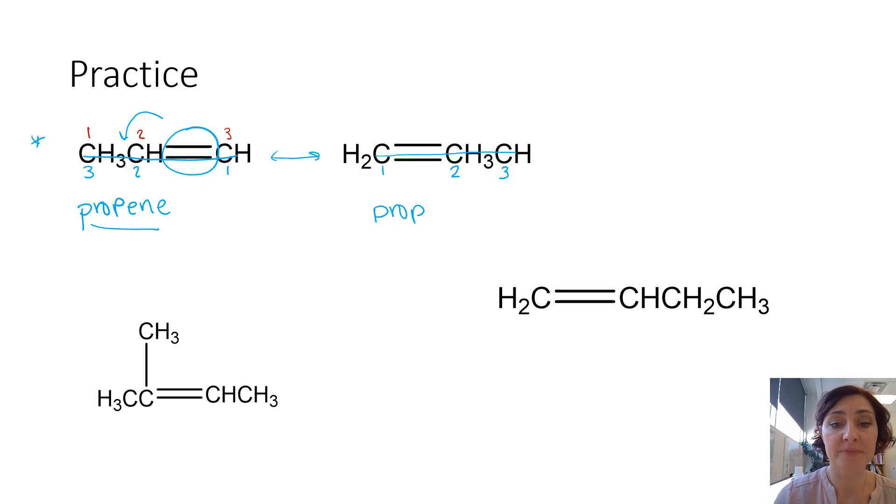In this situation, it doesn't matter where we start counting. We always give the lowest priority to the double bond. So again, it's prop, double bond tells us E-N-E ending. So these are actually the same molecule. When we get into making isomers and we get a little further along, be careful that you are looking to see, these are in space, they can turn, and these are actually the same molecule.